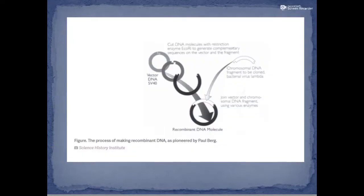This is a picture from the Science History Institute depicting what Paul Berg had done. The vector DNA SV40 was cut using restriction enzyme EcoR1. EcoR1 is a restriction enzyme derived from E. coli. At the same time, he took lambda DNA, a bacterial virus lambda phage.